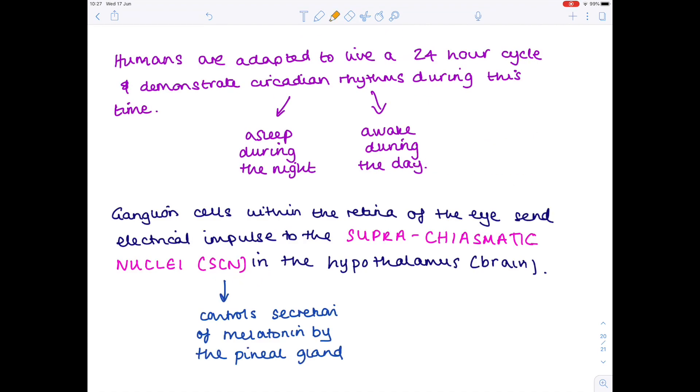So let's do some highlighting. We know that we have circadian rhythms which run to a 24-hour cycle. How is this controlled?